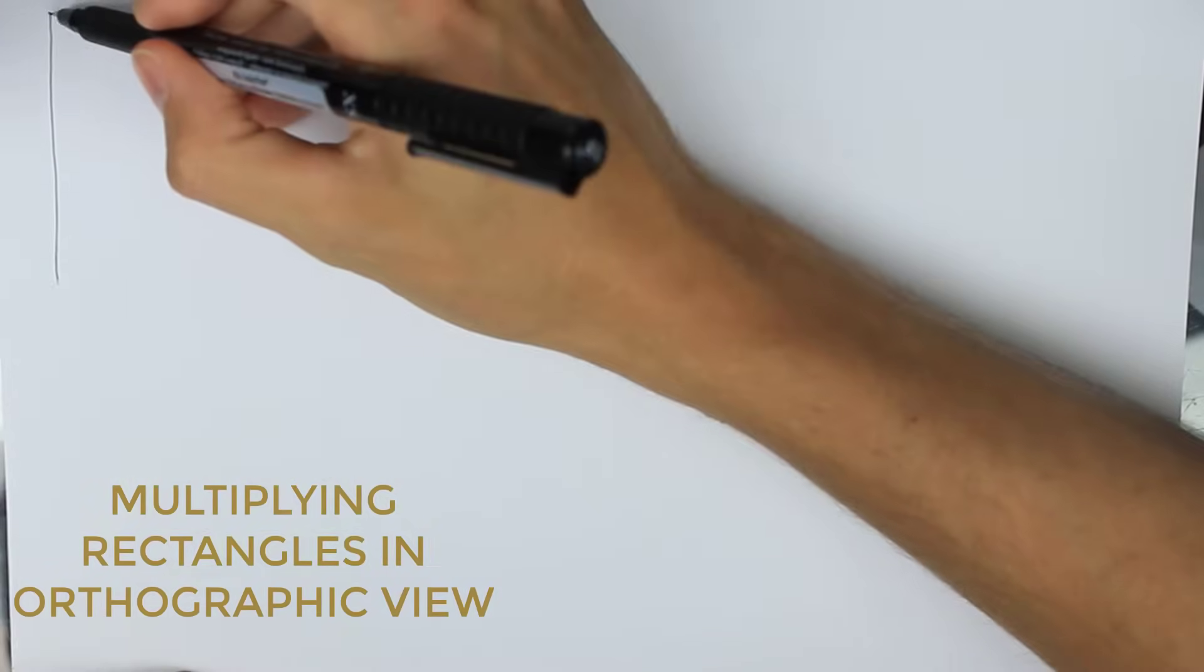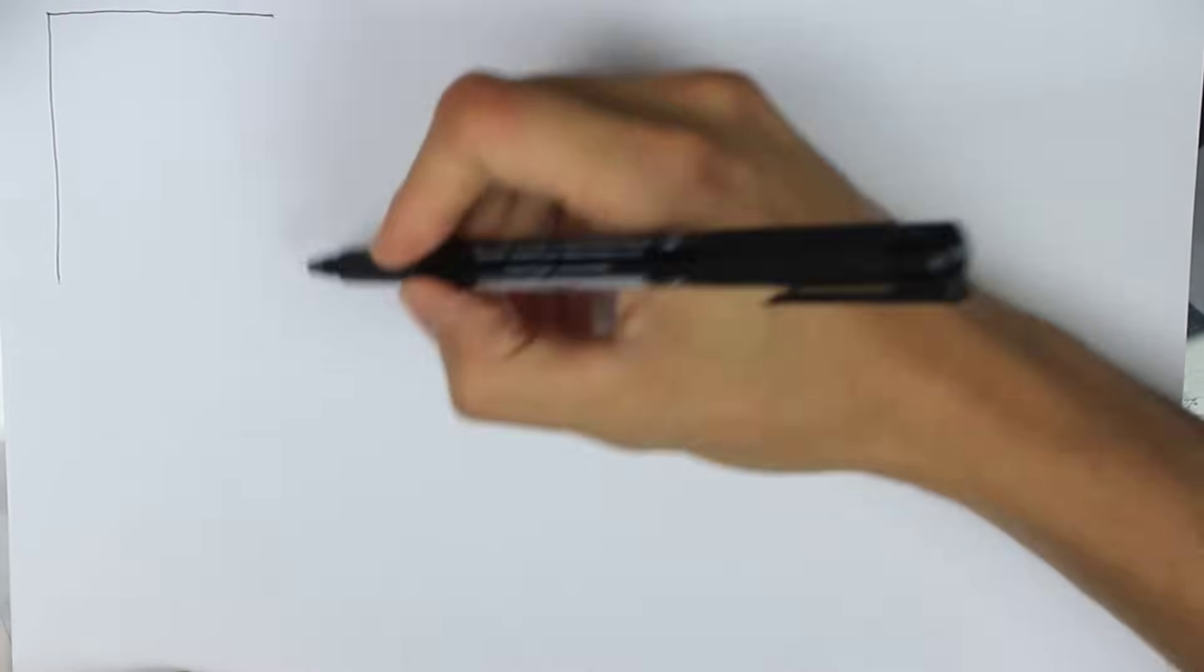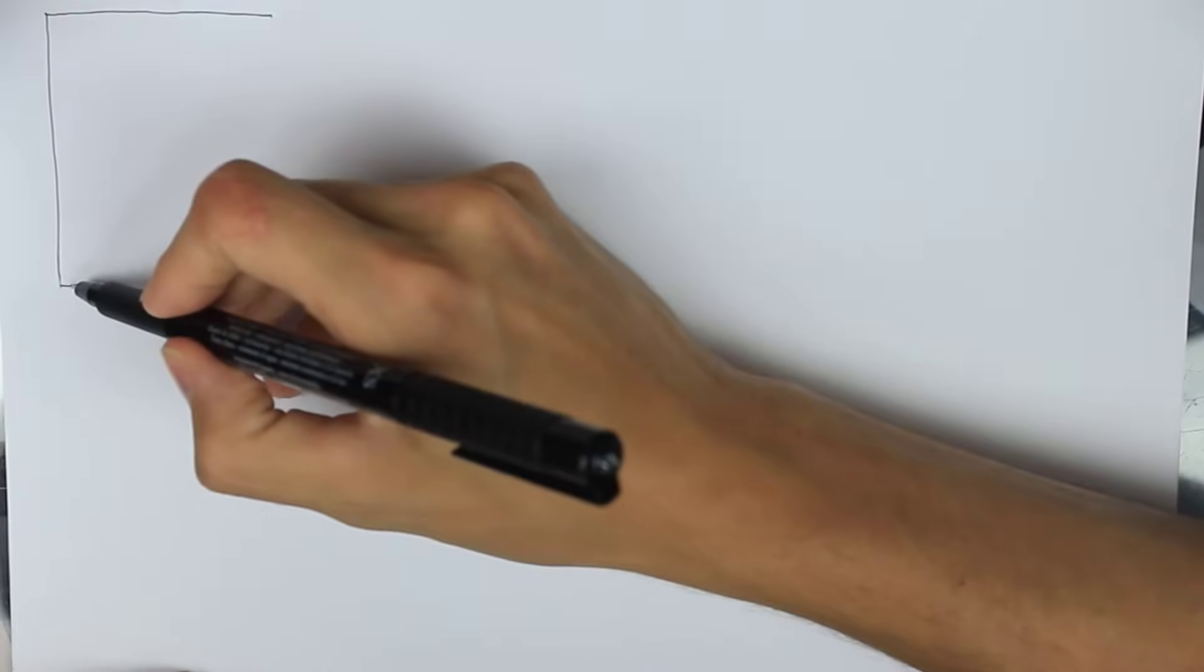In order for us to duplicate a rectangle in perspective, we first need to understand how to do it when we're looking at it straight on in an orthographic view.